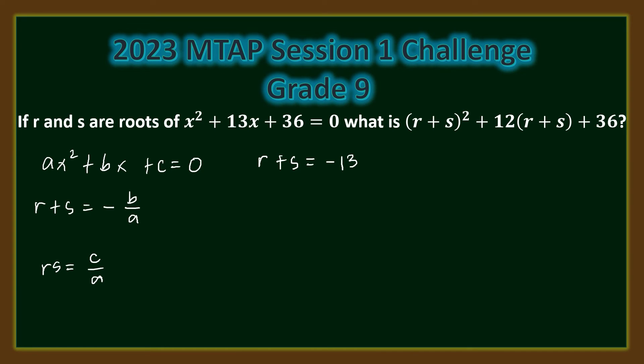Therefore, if we will get the value of the square of the binomial r plus s, plus 12 times the binomial r plus s, plus 36, we will just substitute the value of r plus s.